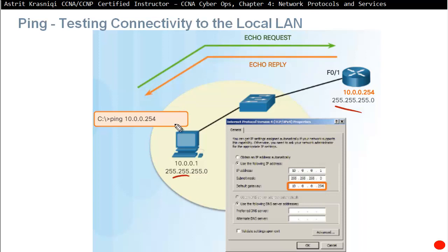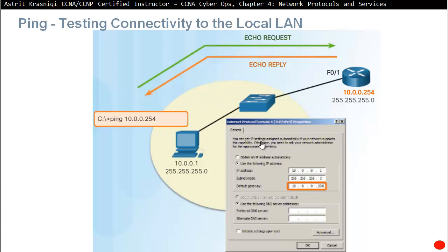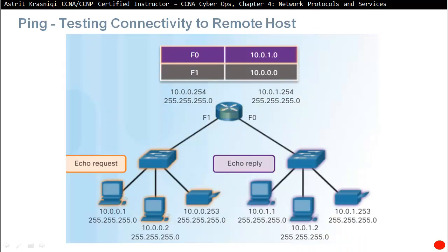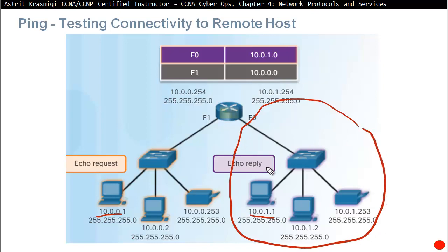If we get an echo reply from the gateway, we know our local network is reachable — the problem must be at or beyond the gateway. If we cannot ping the gateway, we need to troubleshoot the local device — check its network card properties. For pinging a remote network, the device at 10.0.0.1 would ping 10.0.1.1, which is on a different network — remember every interface on the router is its own network — so that is pinging the remote network.